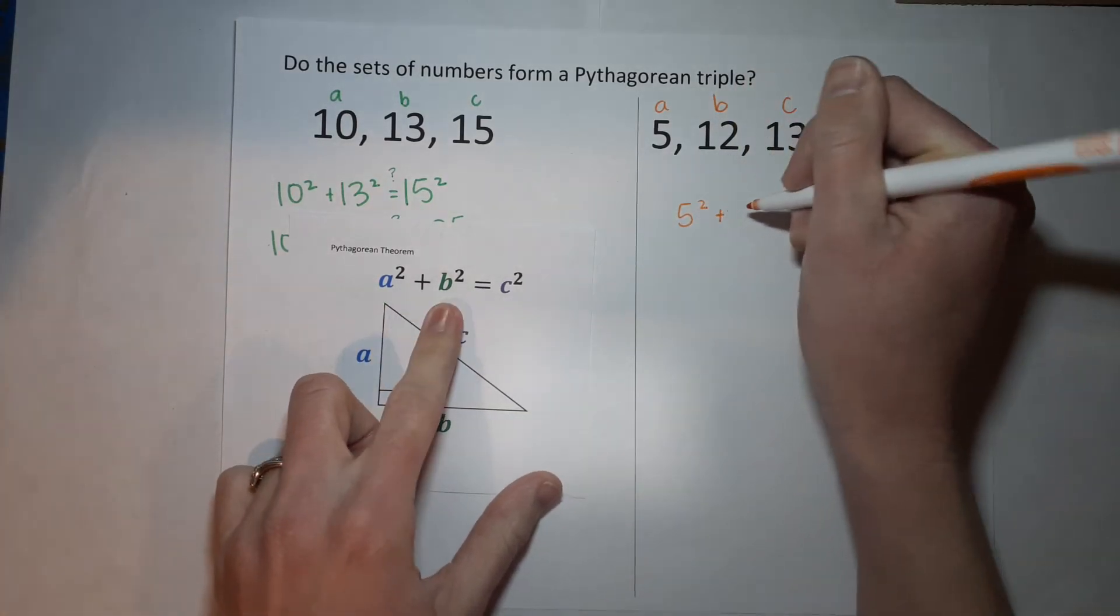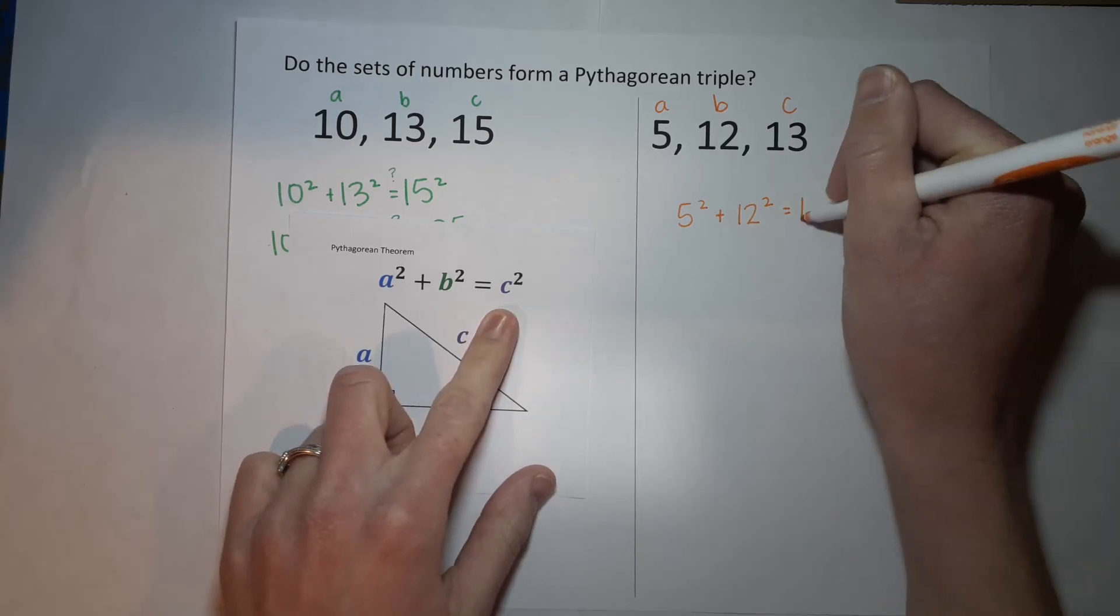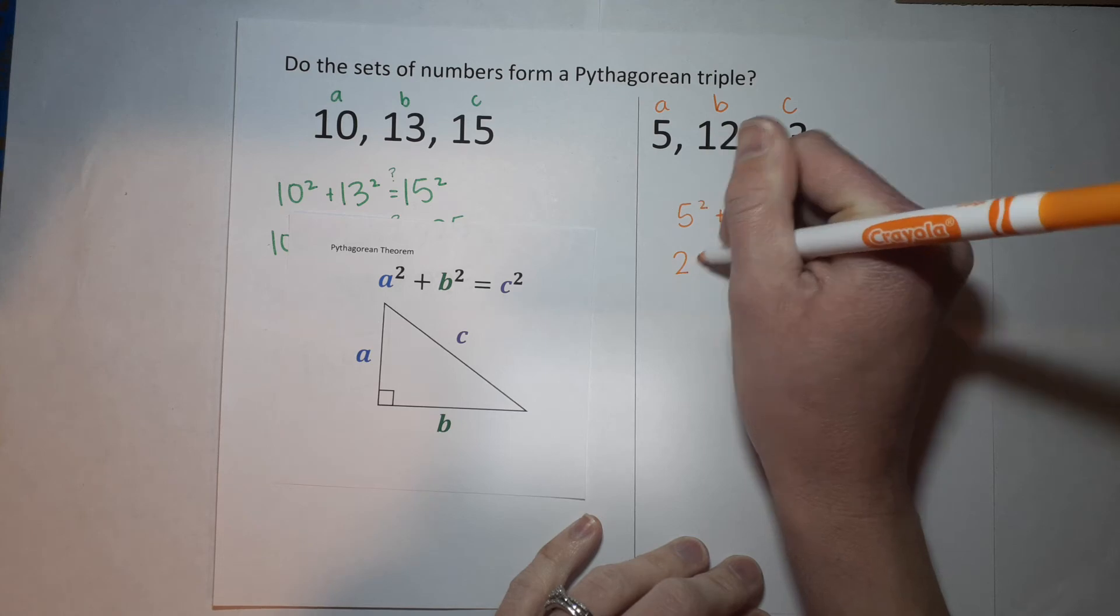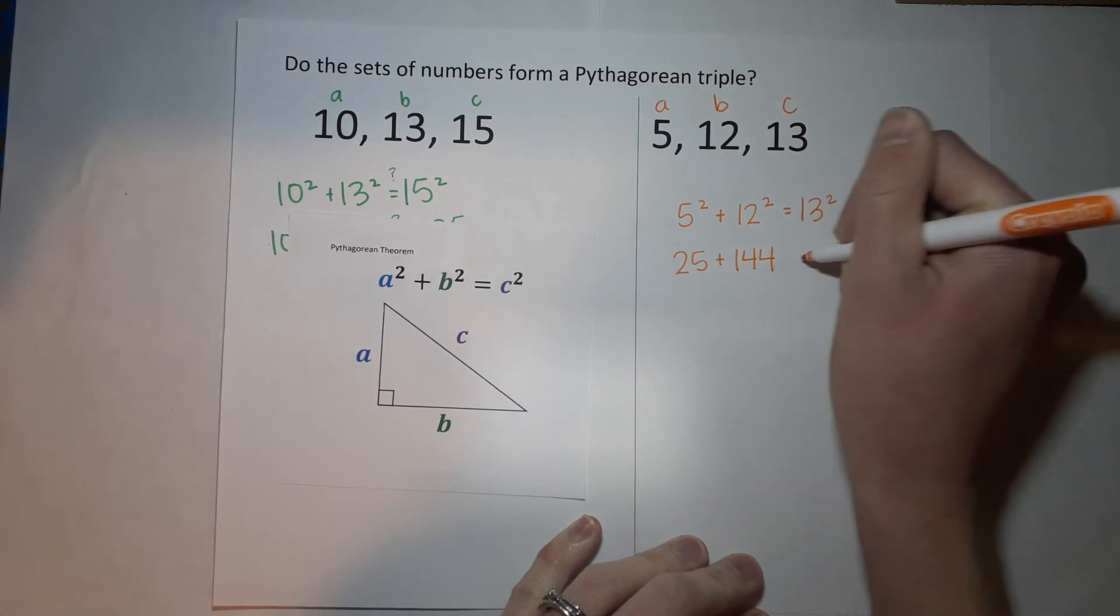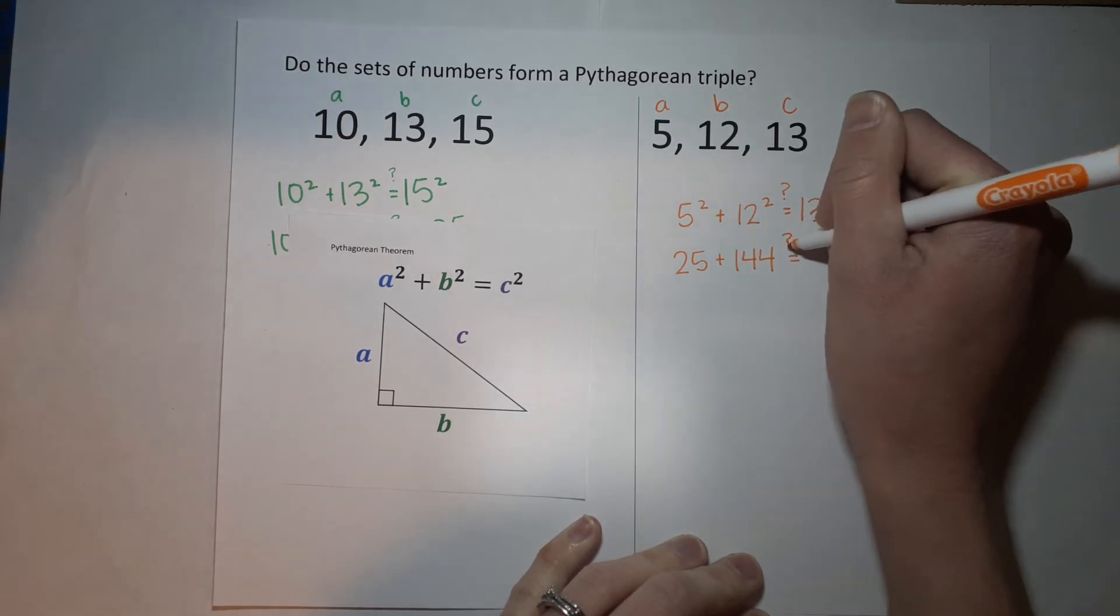So a²: 5² + b²: 12² = c²: 13². All right, 5² is 25, 5 times 5. 12² is 144. 13² is...oh again, sorry, I should be putting a question mark here because we're checking to see if it's equal. Sometimes I forget that.